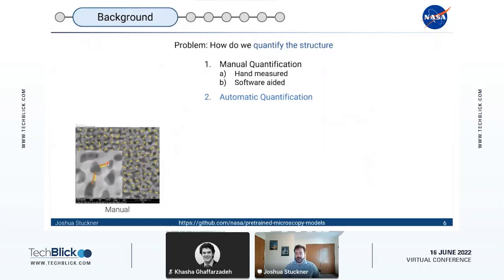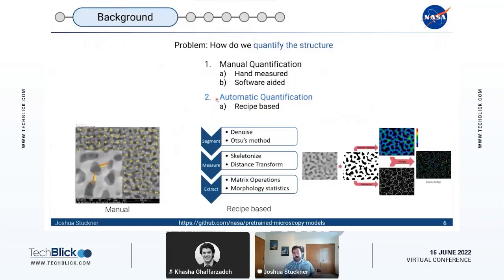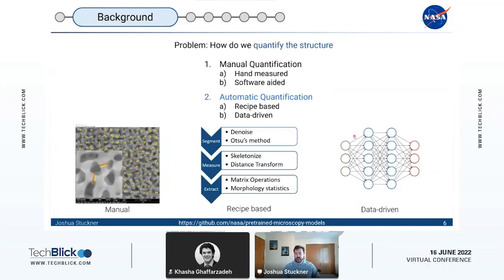There's several different approaches for this. One is recipe-based where we design some bespoke computer vision algorithm to maybe perform segmentation, find the backbone along the ligaments, and calculate the distance. Then we'll do some matrix operations to get a radius measurement along every single pixel along the backbone. Or more recent approaches are more data-driven where we input the image into the model and just extract some latent feature vector. So the technique that we've developed will improve the segmentation step for recipe-based and also the data-driven.